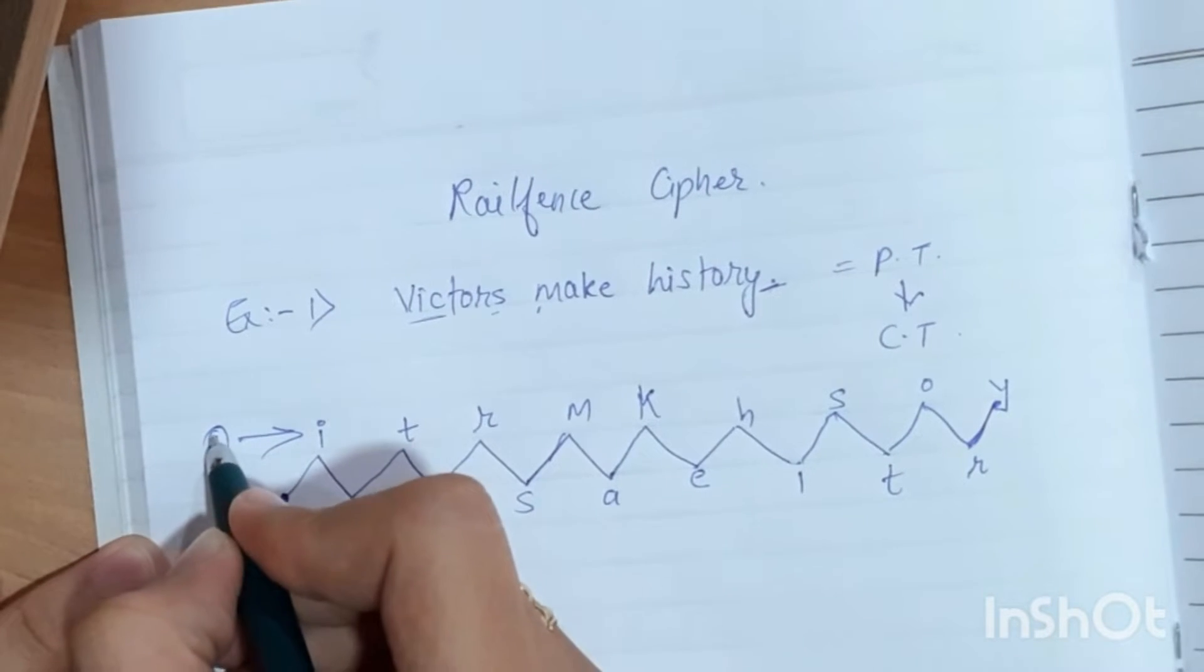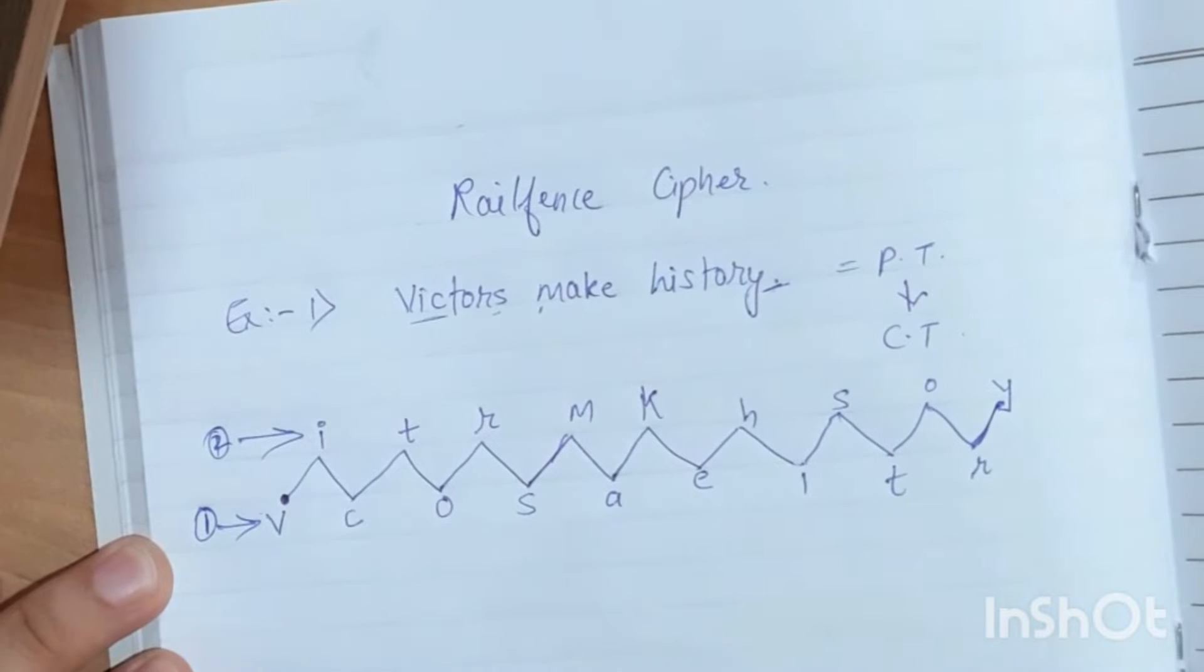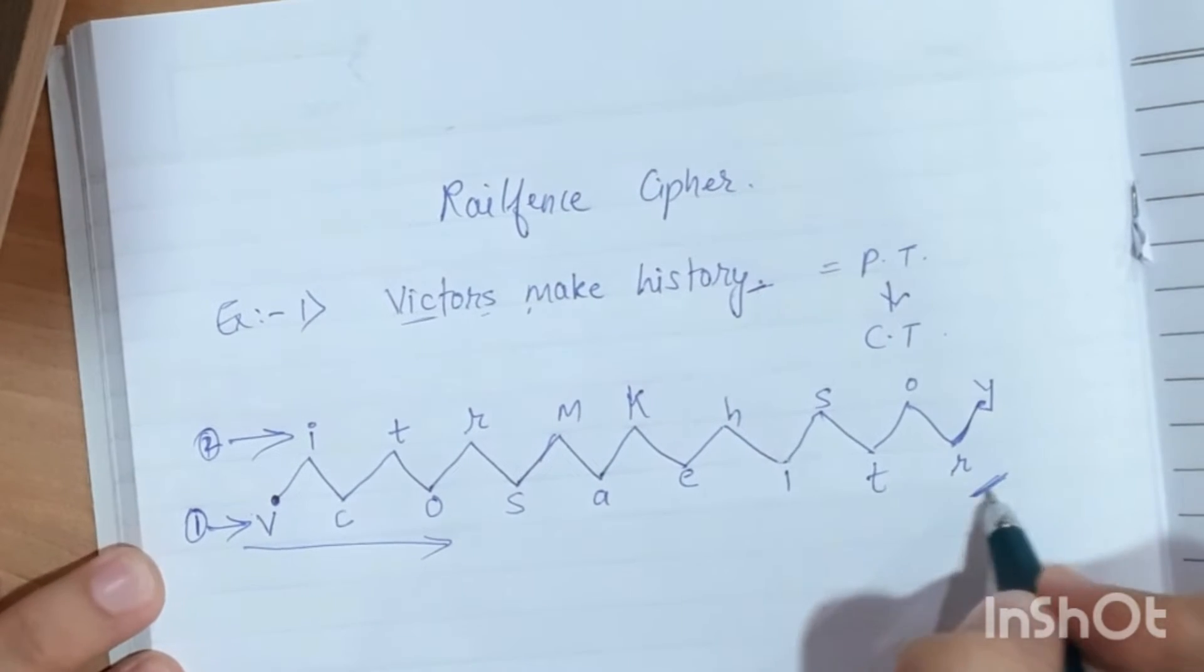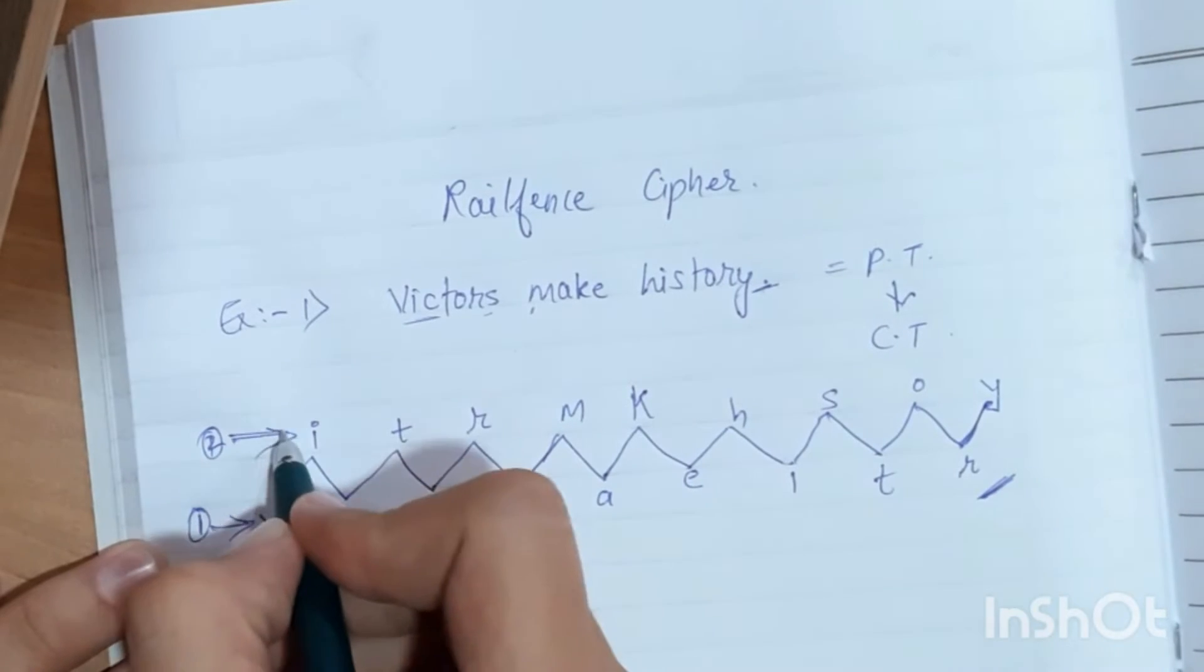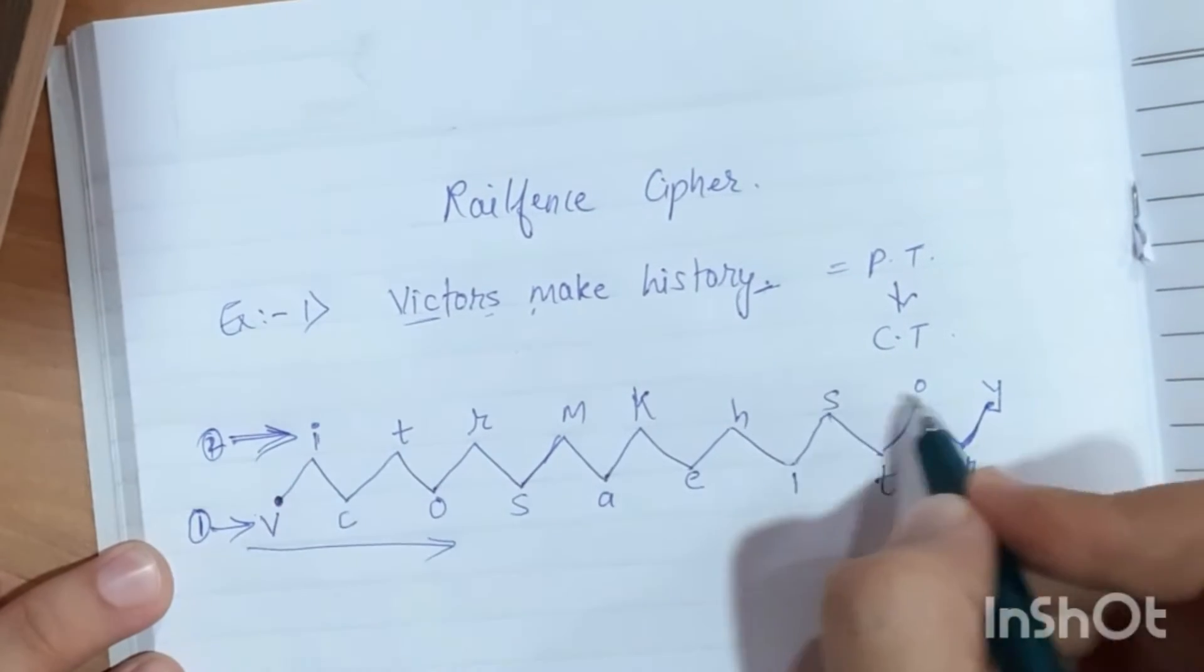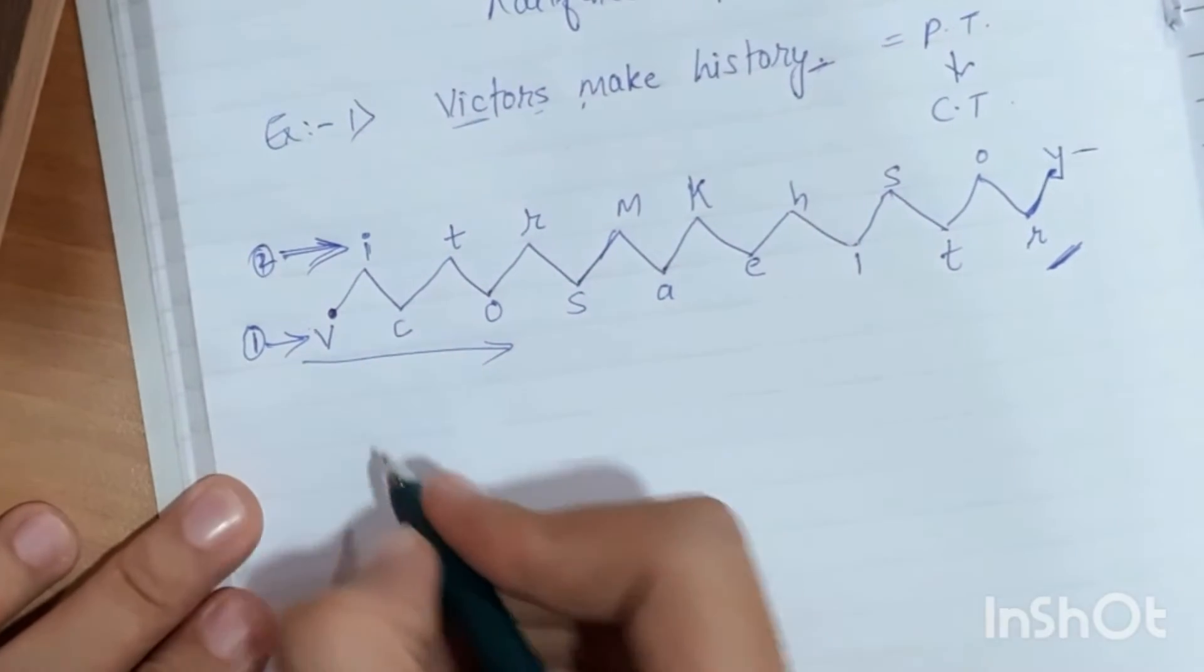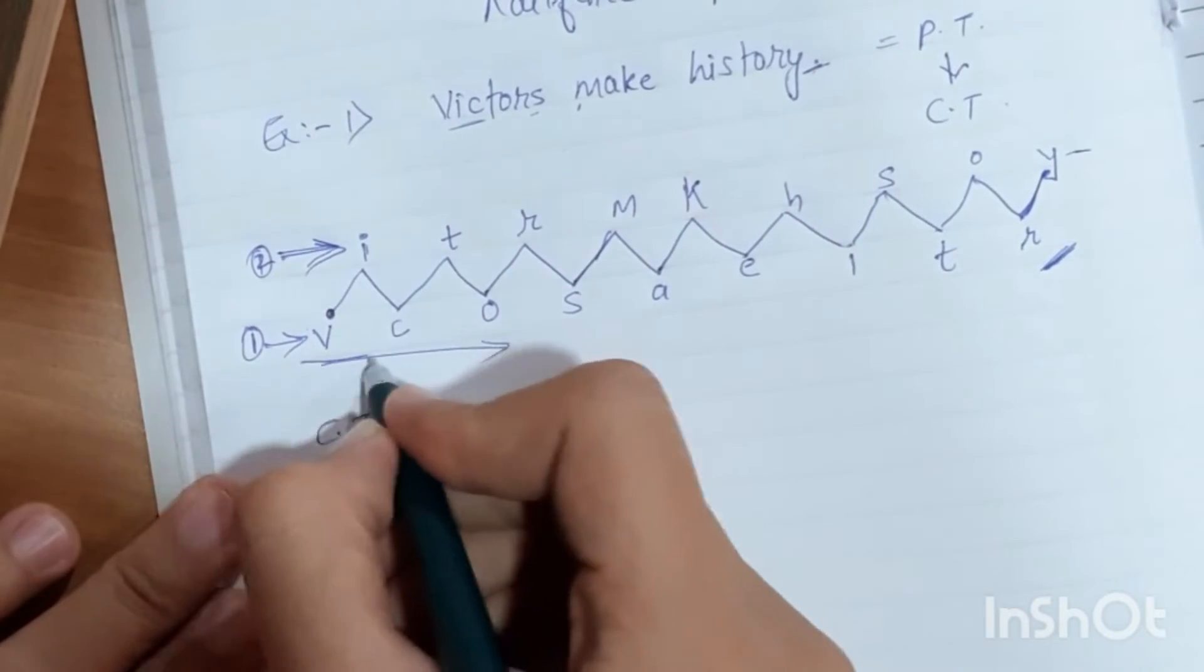We have to collect from the bottom. First collect V and C. Then collect the second row. We will collect the second row from the bottom, because we started with V.